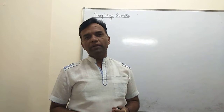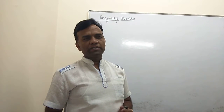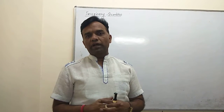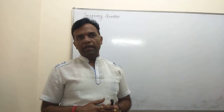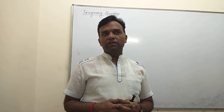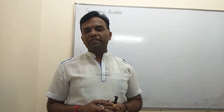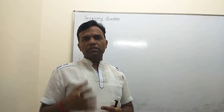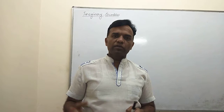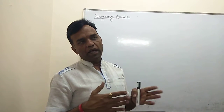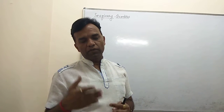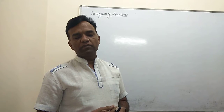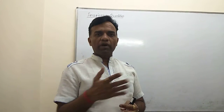Today's video is on complex numbers from class 11. In the previous video we discussed imaginary numbers, denoted by iota, and described properties related to iota — like iota equals under root minus 1. We also covered i square, i cube, i to the power 4, and how to evaluate higher powers of iota by reducing large exponents and simplifying the results.